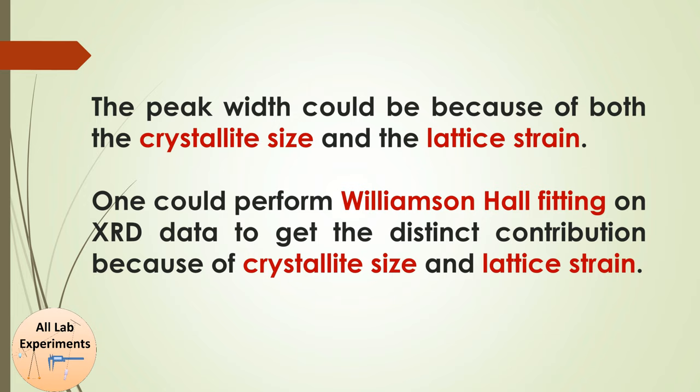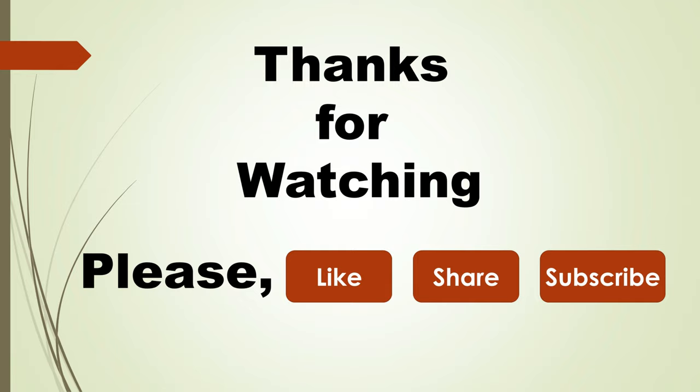So crystallite size and lattice strain are both responsible for the width of a peak. To get the exact values of crystallite size and lattice strain separately, one can perform Williamson-Hall fitting. I will also make a video on this later. In this way we have explained the reasons for the position, intensity, and FWHM of an XRD peak. Thanks for watching — please like, share, and subscribe. If you have any query, comment in the comment section. Have a good day!